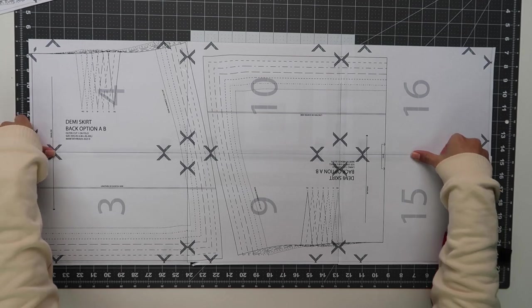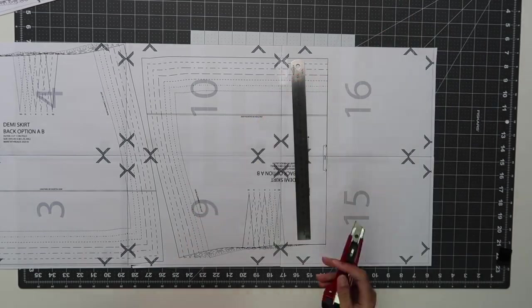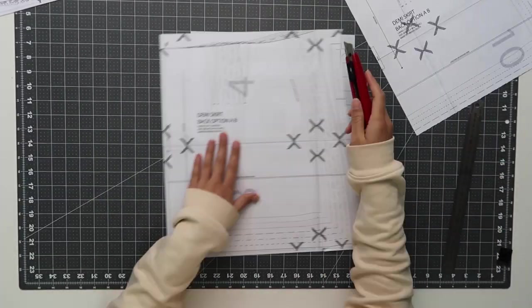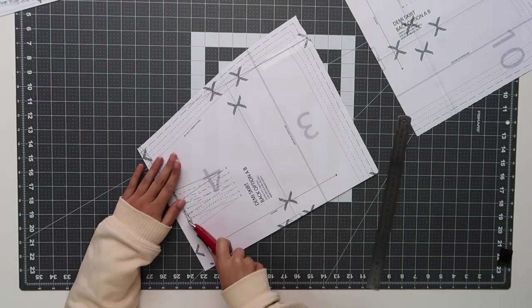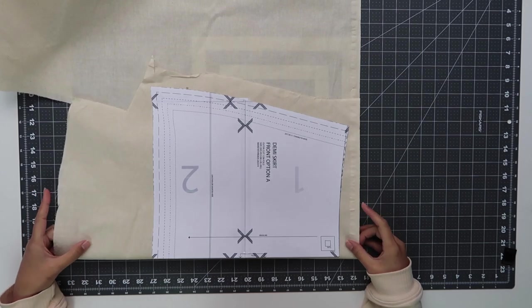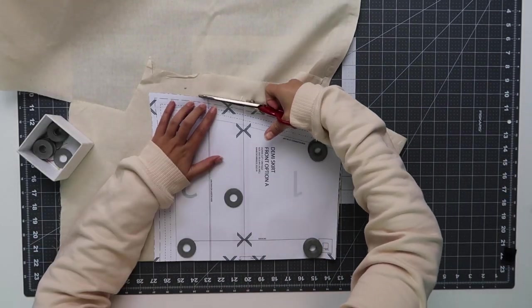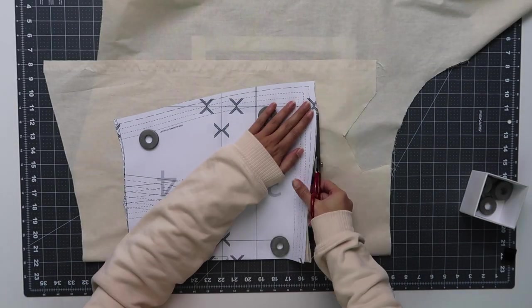Then once you've attached everything together then you will go in with the longer lengths of tape. And then you're just going to cut out the sewing pattern. Make sure that you use the size key in PDF one page two to pick your size so that you can make the right skirt. So because I am doing design option A, all of the sewing pattern pieces are cut out on the fold, so ensure that your fabric is placed on a fold and then cut it out.